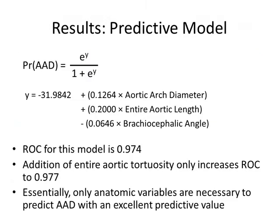We took these variables and applied them into a predictive model to assess risk for AAD. Using a stepwise logistic regression, we found that aortic arch diameter, entire aortic length, and brachiocephalic angle may be used to predict type B AAD development with a predictive value of 0.974, as measured by the receiver operating curve, or ROC, which is a measure of predictive validity of this model. The addition of entire aortic tortuosity only increased the ROC by 0.003, suggesting that we have an excellent predictive model using only anatomic variables to predict AAD.